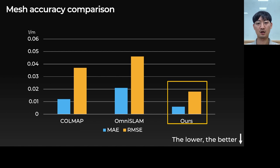Now we show a comparison of mesh accuracy. We render a depth map from the output mesh at the center of the camera trajectory and compare it with the ground truth. Our method shows the best results.